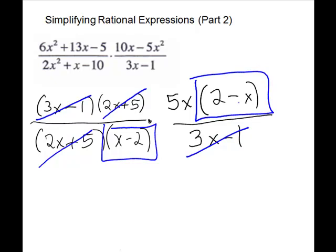x minus 2 and 2 minus x. Pieces with exactly opposite signs. Positive x, negative x, 2, negative 2. They will divide out, but remember it goes negative one time.